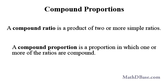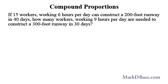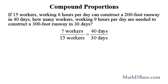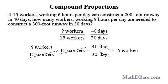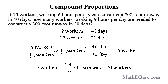A compound proportion is a proportion in which one or more of the ratios are compound — that is, the product of two or more simple ratios. If fifteen workers working six hours per day can construct a 200-foot runway in 40 days, how many workers working nine hours per day are needed to construct a 300-foot runway in 30 days? To do it in 30 days, the unknown workers over 15 workers equals 40 days over 30 days. Solving, this gives 20 workers required to construct a 200-foot runway in 30 days.